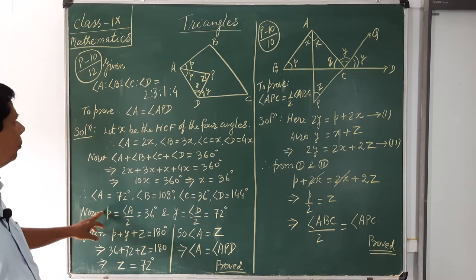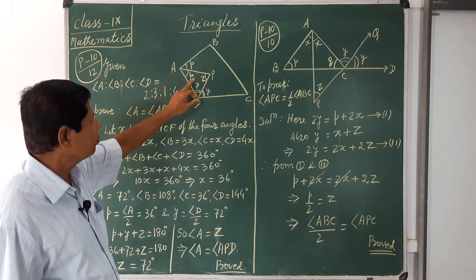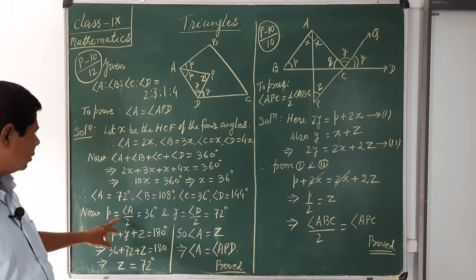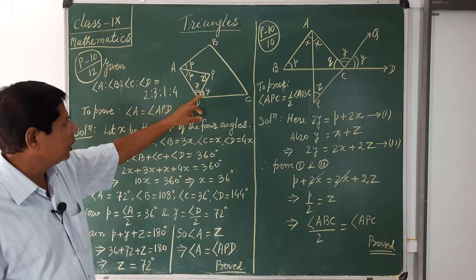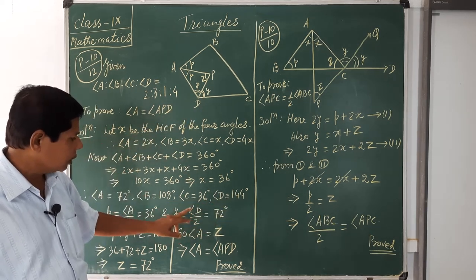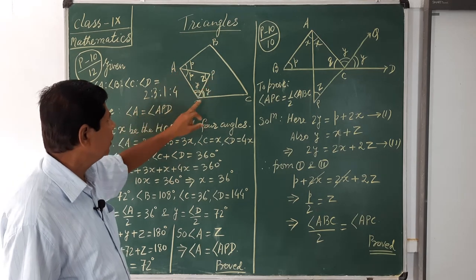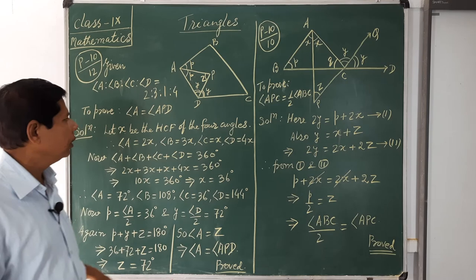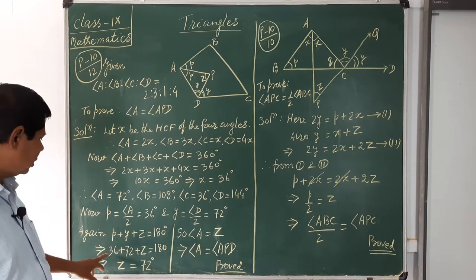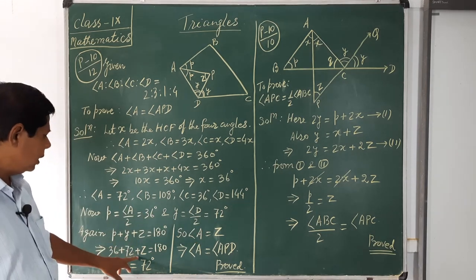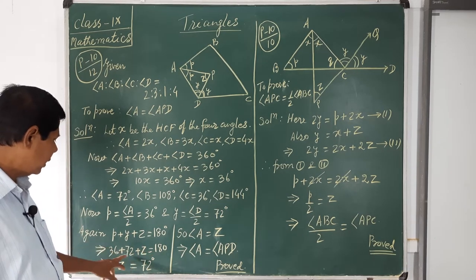Now calculate the angles: small p = A/2 = 72/2 = 36°, and small y = D/2 = 144/2 = 72°. In triangle APD, by the angle sum property: p + y + z = 180°. So 36 + 72 + z = 180, giving z = 180 − 108 = 72°.